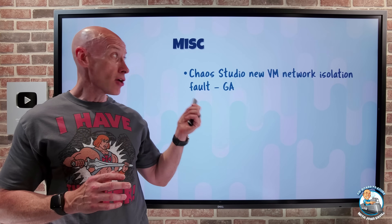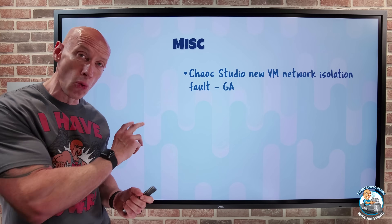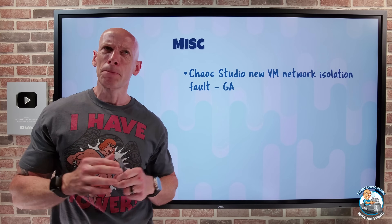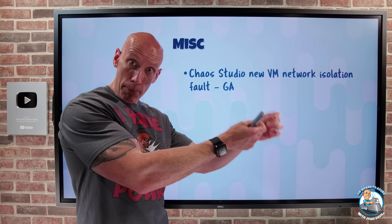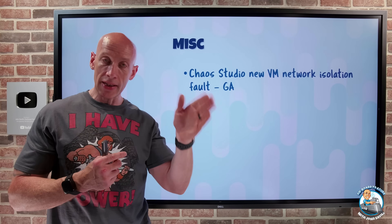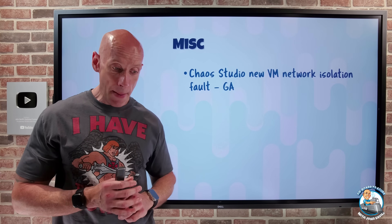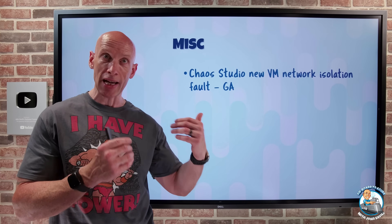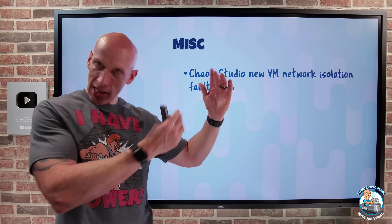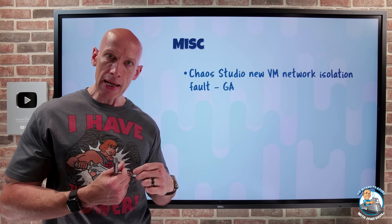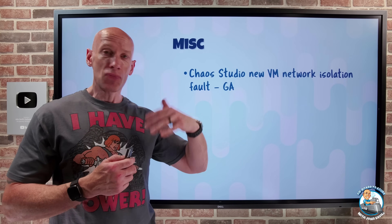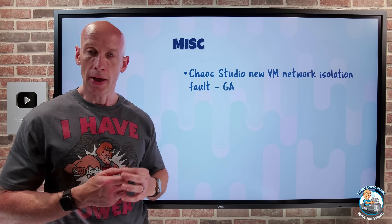Chaos Studio now has a new virtual machine network isolation fault. Chaos Studio lets me craft experiments where I define types of failures to simulate — by actually making that effect happen to the target resources, so be careful where you use this. For the VM network isolation fault, it will drop all inbound and outbound packets for the targeted VMs for whatever duration I configure. I can't cancel the experiment once it starts, because the cancellation packet itself would be dropped. For Linux, it's outbound only.